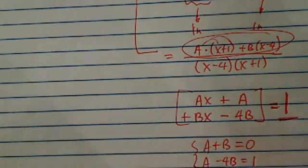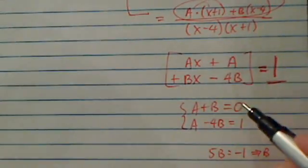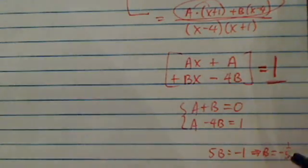Solving the system of equations, I can easily see that when I subtract them, I have 5B equal to minus 1. So B is equal to minus 1 over 5.